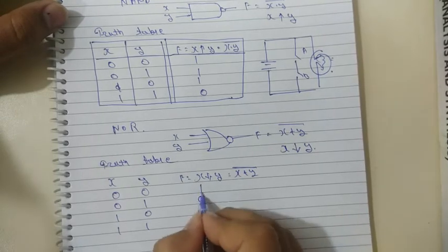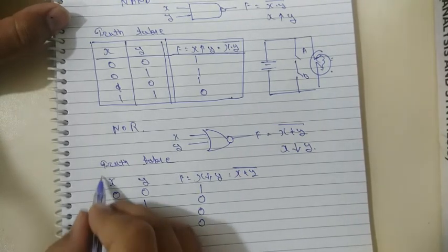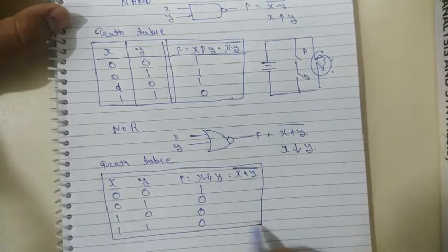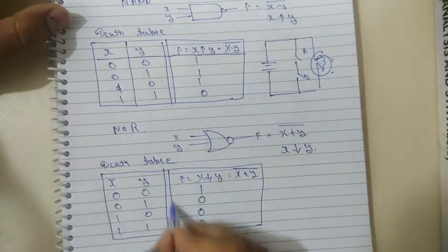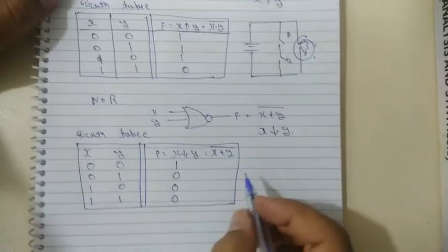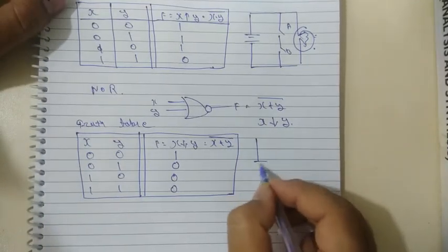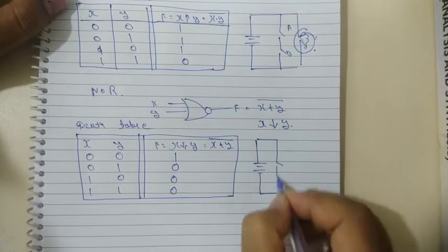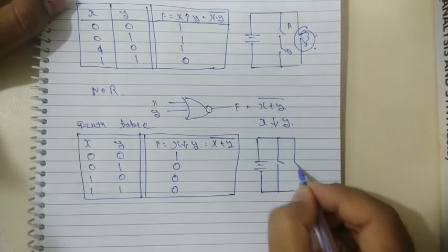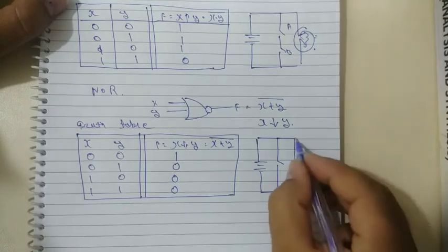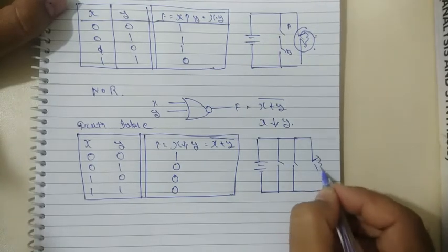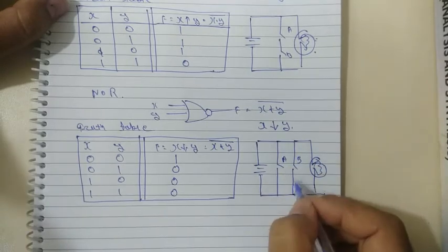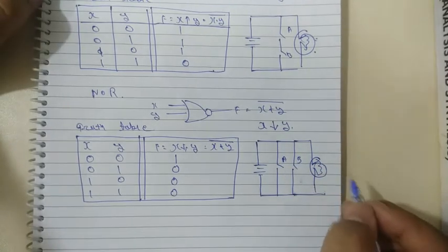The output will be 1 when both inputs are 0. For the electrical equivalent circuit, switches A and B are connected in parallel with each other and with the lamp. If any switch is closed, the output lamp will not glow.